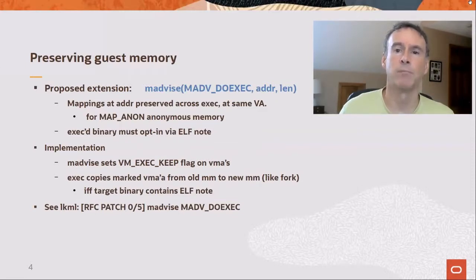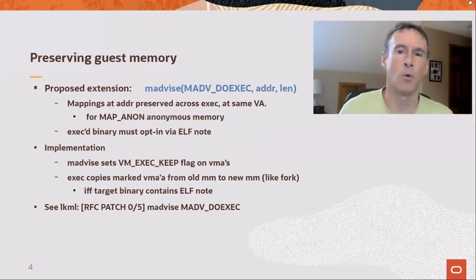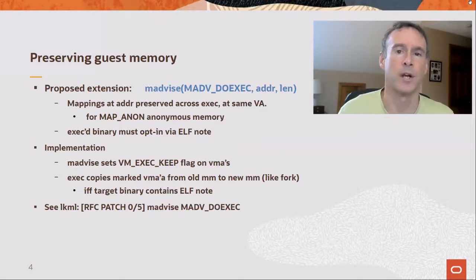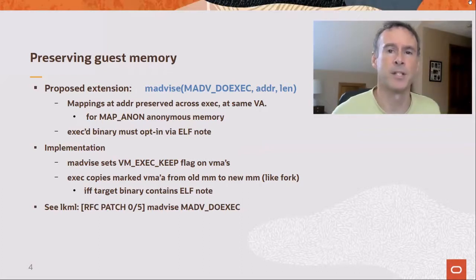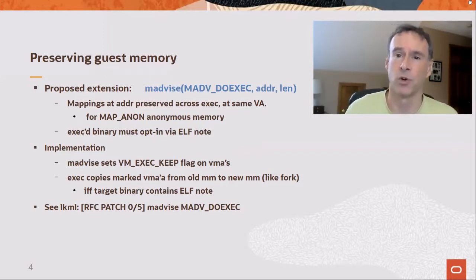To preserve guest memory in place, we propose an extension to the madvise system call called madvise-do-exec. This preserves mappings in an address range across exec at the same virtual address. It works for memory created with MAP_ANON, which otherwise would disappear after exec. The executed binary must explicitly allow incoming mappings via an ELF note. This prevents unexpected sharing of content across the exec. The implementation is straightforward, about 300 lines of kernel code.